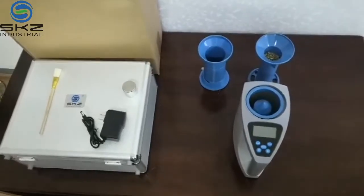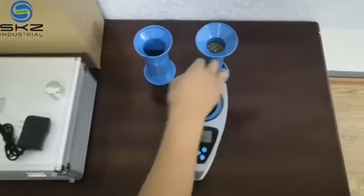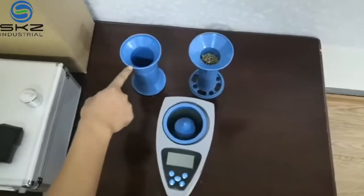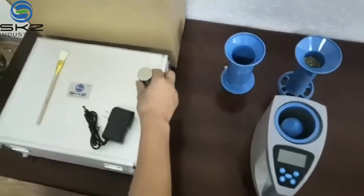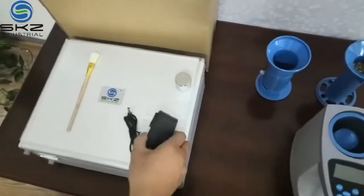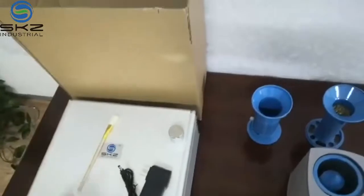Now let me introduce the accessories. This is the moisture meter. This is the funnel with scraping. This is the drop barrel. This is the saturation weight. This is the AC charger. This is the brush. This is the package with the housing and packaging.